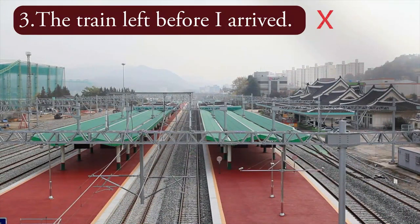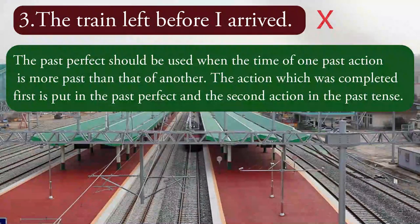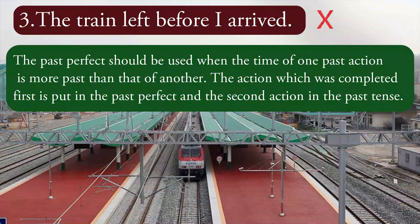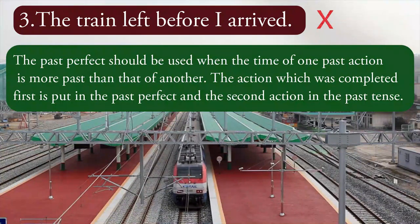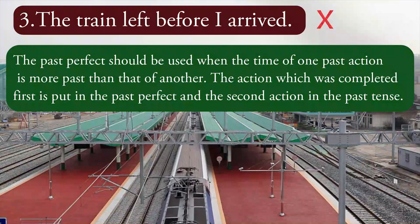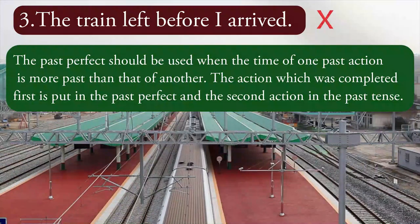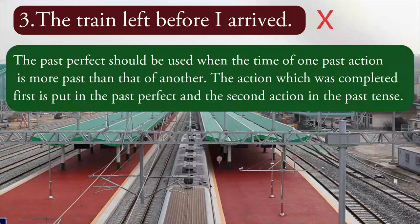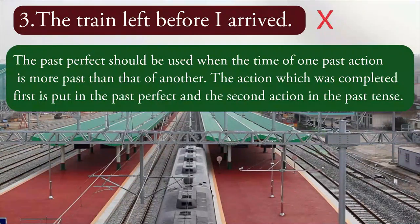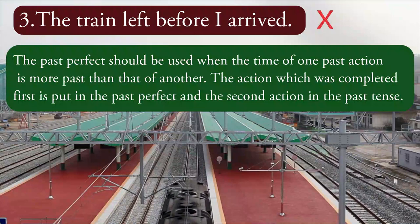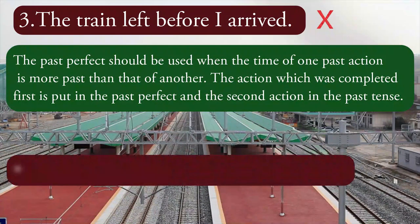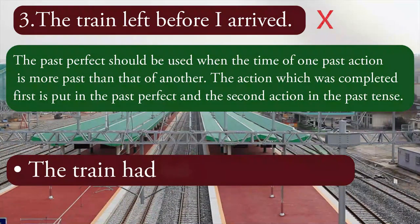The past perfect should be used when the time of one past action is more past than that of another. The action which was completed first is put in the past perfect and the second action in the past tense. Now please repeat the correct sentence after me: The train had left before I arrived.